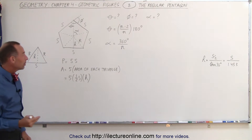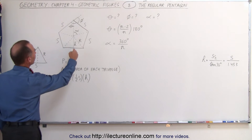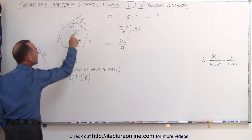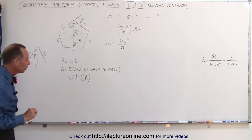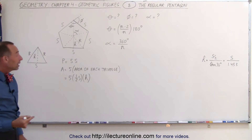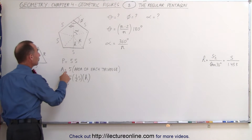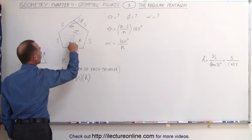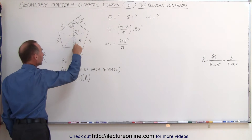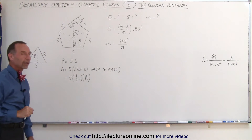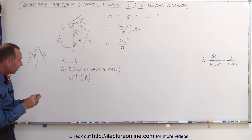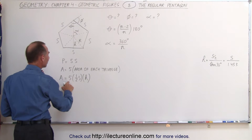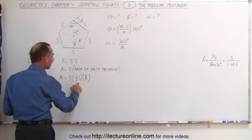To find the perimeter of a regular pentagon is not very difficult — you simply say it's five times the length of each side, since each side is of equal length. To find the area, the best way is to say that the area is equal to five times the area of each of the five triangles. So the area of the regular pentagon equals five times half the base times the height.